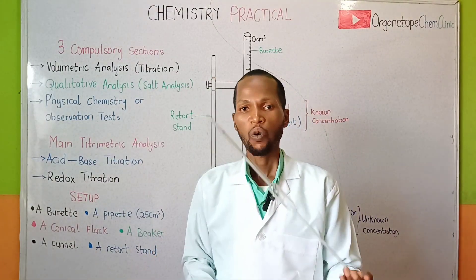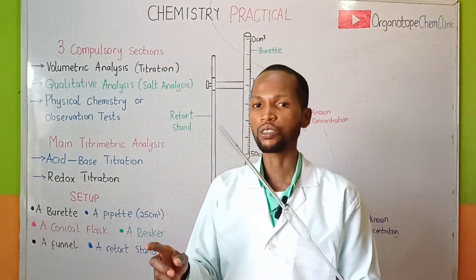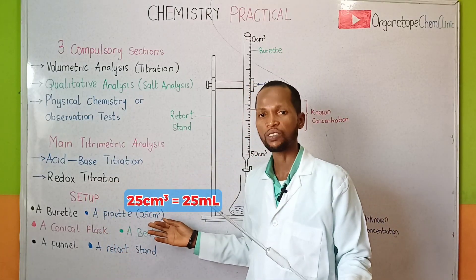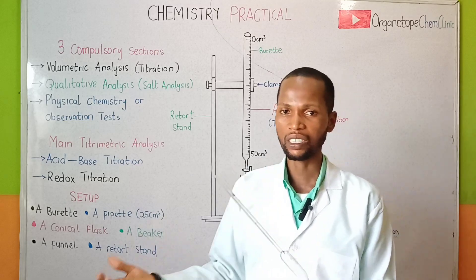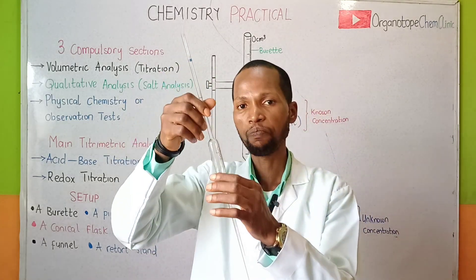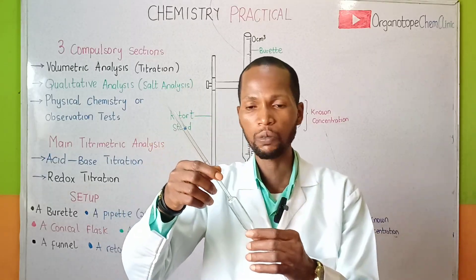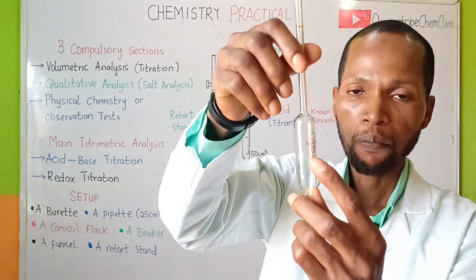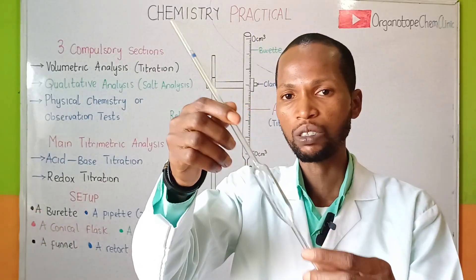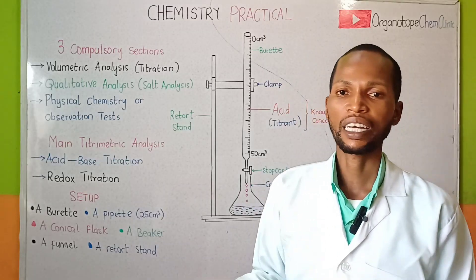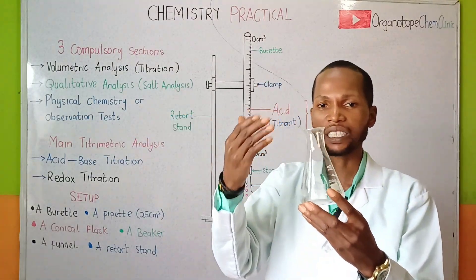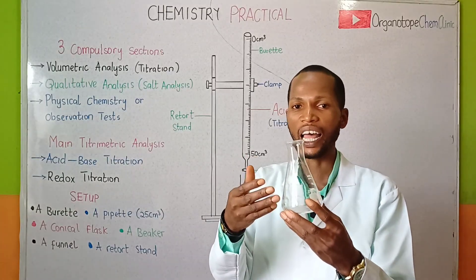Note that 1 cm³ is equivalent to 1 milliliter, so 25 cm³ is the same as 25 mL and 20 cm³ is equivalent to 20 mL. The pipette may be labeled in milliliters or centimeter cubes. It is in the conical flask that we have our analyte. In most acid-base titrations, the analyte is always the base.